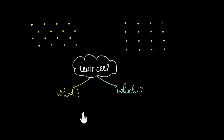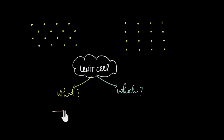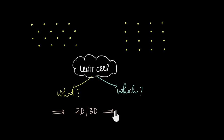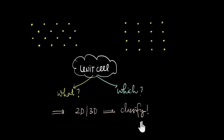So we can now conclude that if there is more than one unit cell that can describe the overall lattice, we should choose the more symmetrical unit cell, as it will better describe the global symmetry of the lattice. Now that we have understood what a unit cell is and which unit cell should be chosen to describe a particular lattice, in the next video we are going to talk about different Bravais lattices in two and three dimensions and classify them into different categories. See you in the next video.